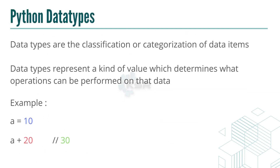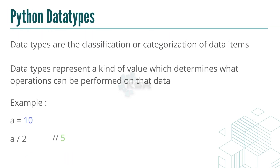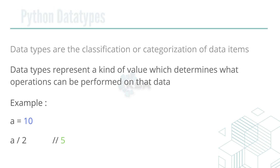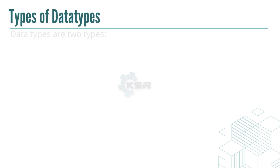For example, if 'a' is 10, we can do 'a + 20' and get 30, or 'a / 2' and get 5. The data type of a variable determines what sort of operations we can perform on it.